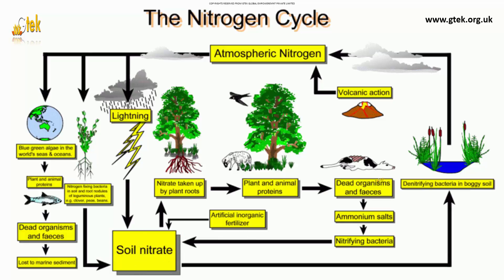Here you can see the small cycle: soil nitrate is taken up by plants, and then plants and animals use it as proteins. Dead organisms and waste are processed by nitrifying bacteria, which return nitrogen to soil nitrate — forming a recycling process. Finally, soil nitrogen goes to denitrifying bacteria in boggy soil, returning it to atmospheric nitrogen. These cycles together are called the nitrogen cycle.